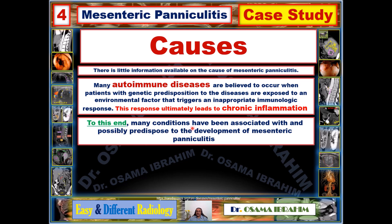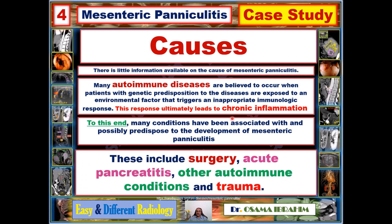Many conditions have been associated with possible predisposition to mesenteric paniculitis, including previous surgery, acute pancreatitis, other autoimmune conditions, and trauma — all resulting in fat stranding. Autoimmune disease should be considered as a cause when there is no history of trauma, surgery, or acute pancreatitis.